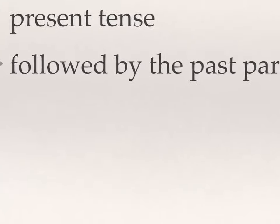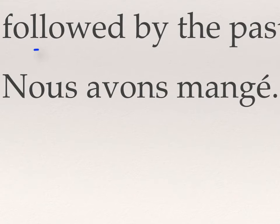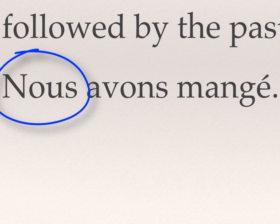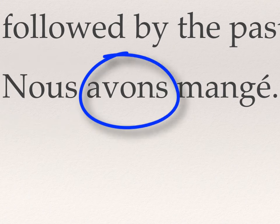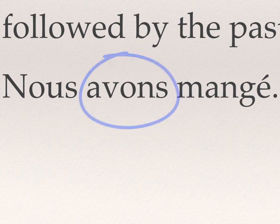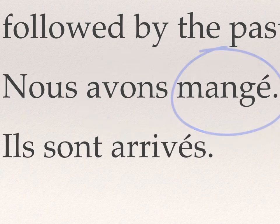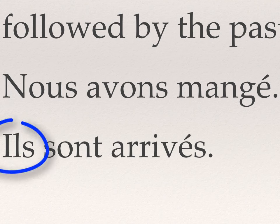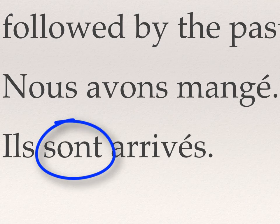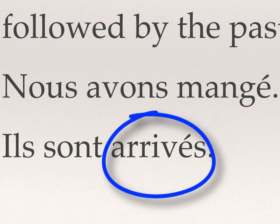Two examples. First: nous avons mangé. The subject here is nous, avons is the auxiliary verb — that's avoir in the present tense — and mangé is the past participle. Another example using être: ils sont arrivés. Ils is the subject, sont is the verb être conjugated in the present tense, and arrivés is the past participle.